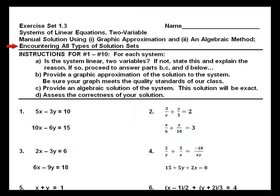This exercise set will encounter all types of solution sets. If you did Exercise Set 1.1, you'll notice the difference — in Exercise Set 1.1, the solution sets always consisted of a single point solution. For problems 1–10, for each system: Part A — is the system linear in two variables? If not, state this and explain the reason. If so, proceed to answer Parts B, C, and D.